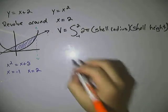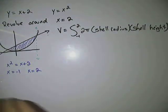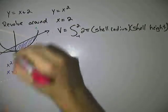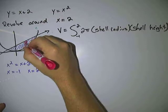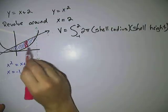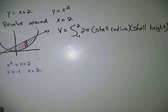So we draw our little shell here, a little arbitrary rectangle that's going to get rotated around this axis. So we'll rotate that around there and you'll create your shell.